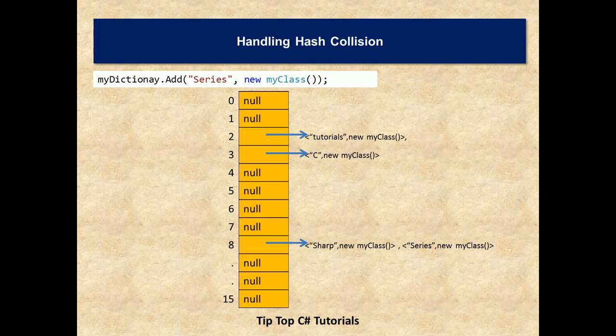The problem with this approach is whenever you are trying to access a key with sharp when you come at the index 8 you see that there are two objects. You have to again manually compare this one. That is why whenever we are trying to access or retrieve item from the dictionary we say that the time taken is almost always constant that is big O of 1 but it is in most of the cases but not in all the cases.